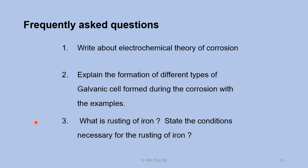Important exam questions frequently asked on this topic: write about the electrochemical theory of corrosion; explain the formation of different types of galvanic cells formed during corrosion with examples; explain composition cell, stress cell, or concentration cell; what is rusting of iron; state the conditions necessary for the rusting of iron.